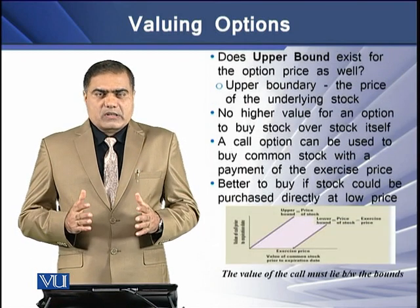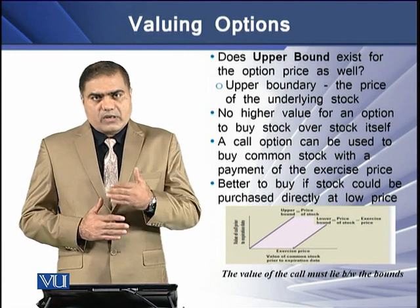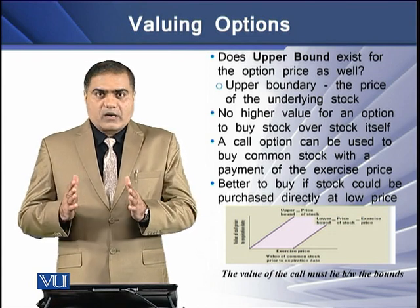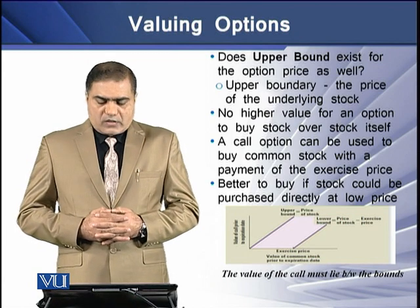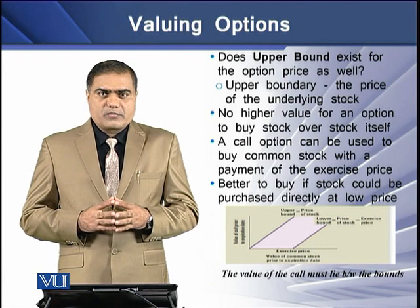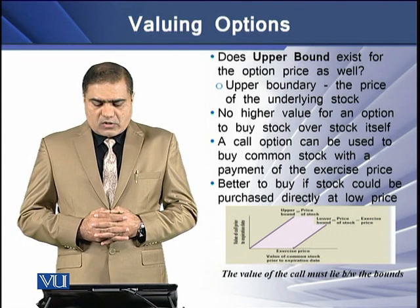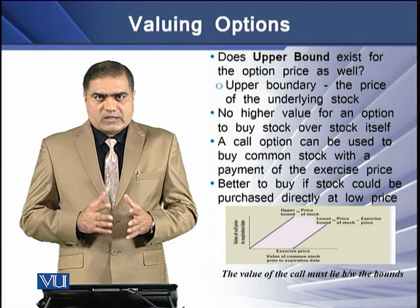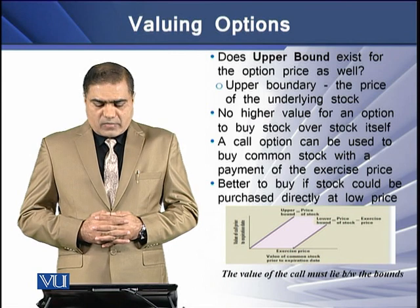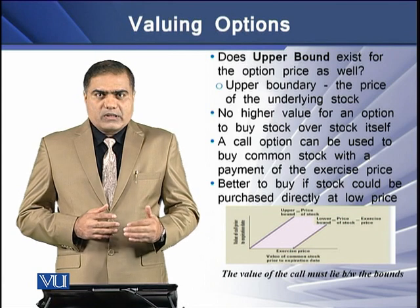As for the upper bound, the question arises: does an upper bound exist? The upper bound is the price of the underlying stock. There is no higher value for the option to buy stock than the price of the stock itself. A call option can be used to buy common stock with payment of the exercise price, and it is better to buy the stock directly if we can buy it at a price below the stock price itself.